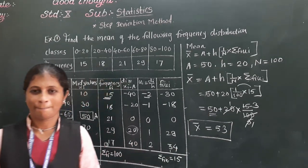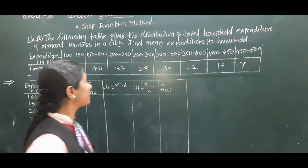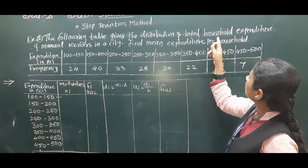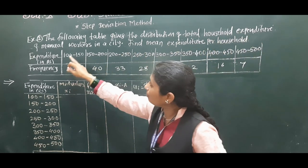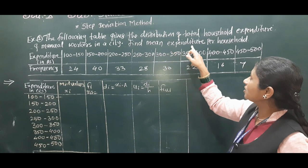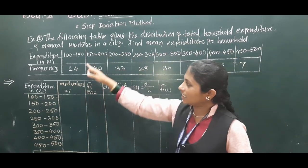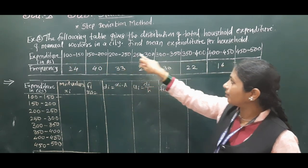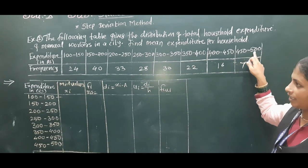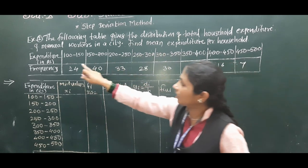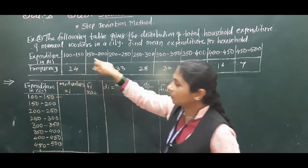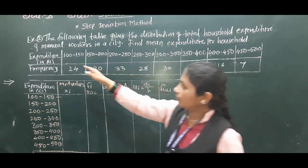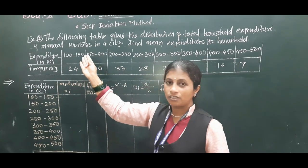Now we will see the next example. The following table gives the distribution of total household expenditure of manual workers in a city — find the mean expenditure per household. The data gives expenditure classes from 100 to 150, 150 to 200, 200 to 250 up to 450 to 500. This is a continuous class interval, and the frequency of each class interval is given.